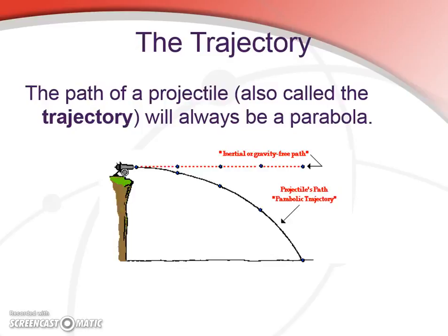One of the key terms that we use when we talk about projectiles is their trajectory. And in gravity, a projectile will always form a kind of a parabola. So, here's an example here of a cannon firing directly off of a cliff.